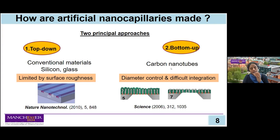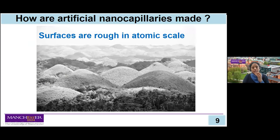With the bottom-up method, you take an entity that can itself act as a fluidic conduit, like a carbon nanotube. The carbon nanotube dimensions can be very small. However, if you take thousands of tubes and try to integrate them, there are problems: difficulty in controlling diameters uniformly, and integration into fluidic chips poses many leakage problems. Combining top-down and bottom-up methods can yield very nice artificial nano-capillaries, provided we can address surface roughness — because any surface is rough at the atomic scale. This is where 2D materials solve the puzzle, as they are atomically flat and make perfect building blocks for 2D capillaries.